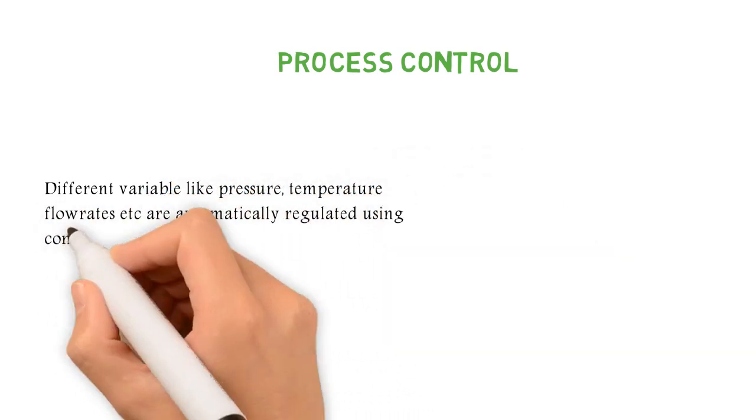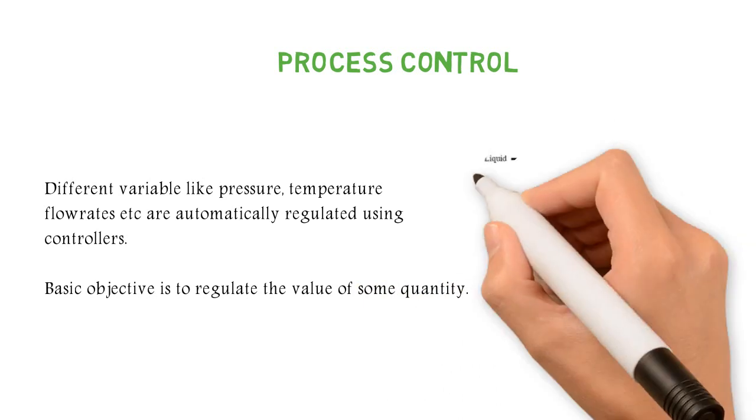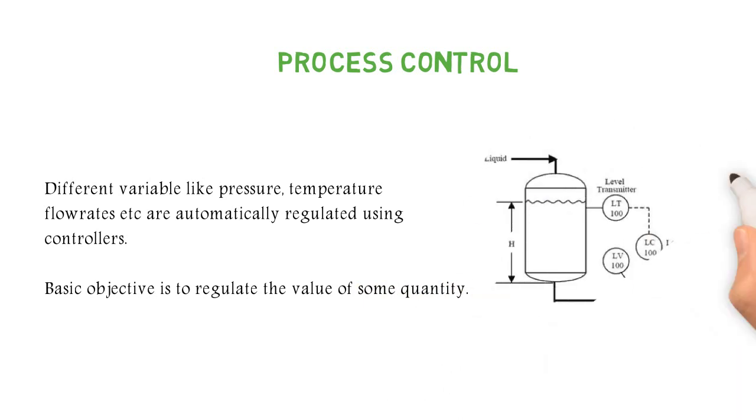In industry, we have different variables like pressure, temperature, flow rate, and concentration. With the help of process control, we learn how these parameters can be regulated automatically. For this purpose, we use controllers.